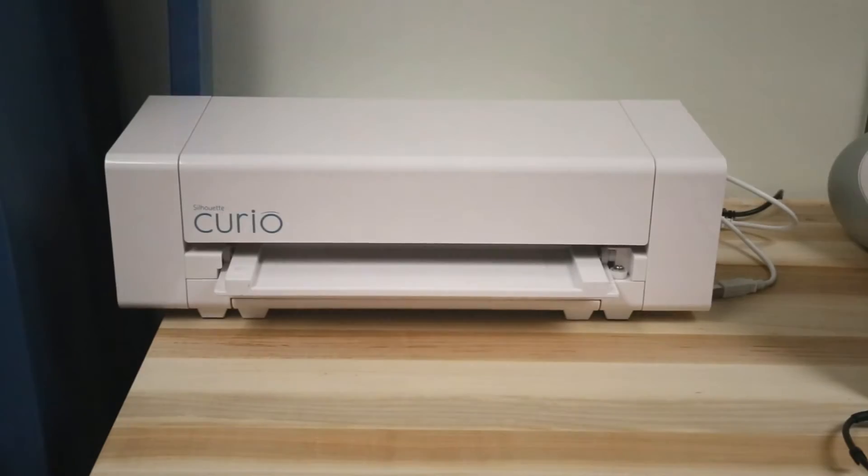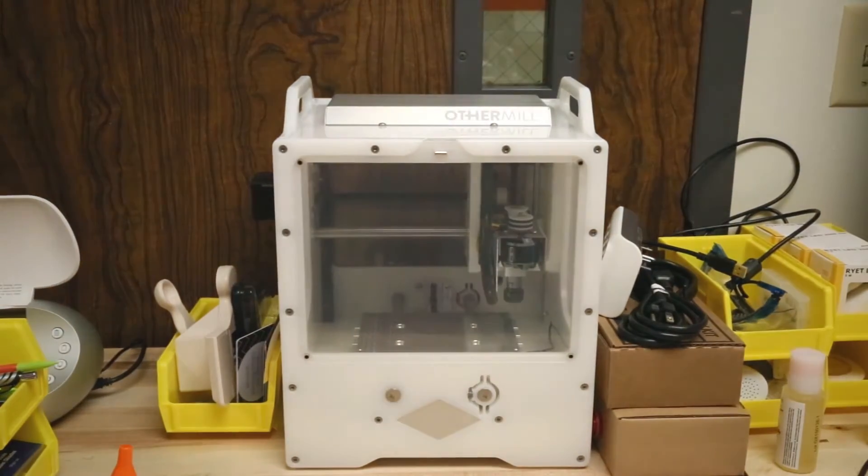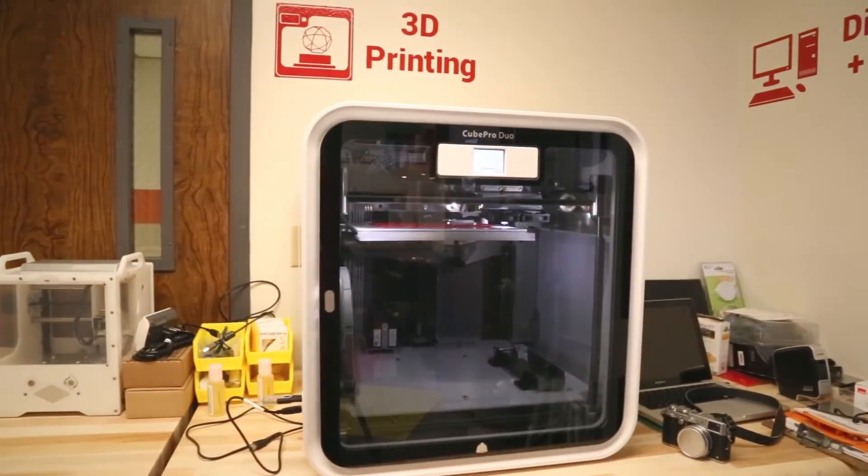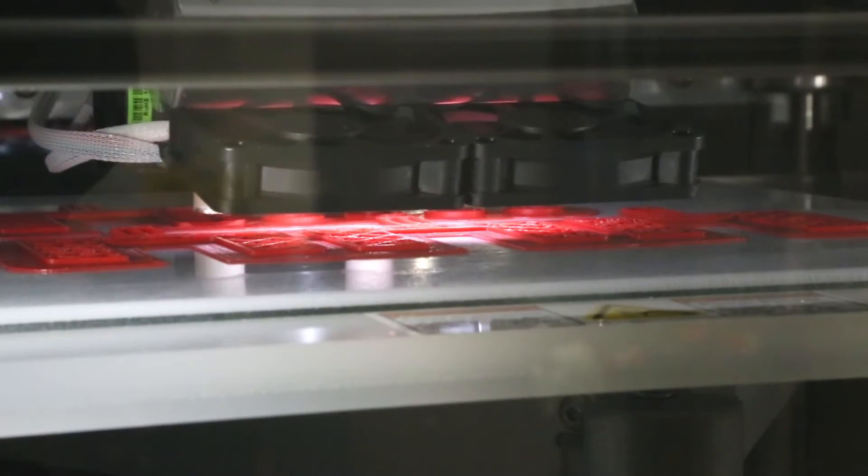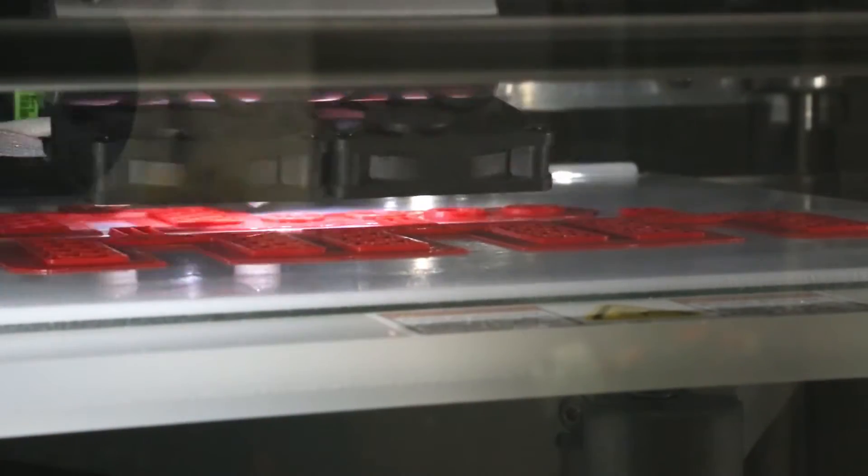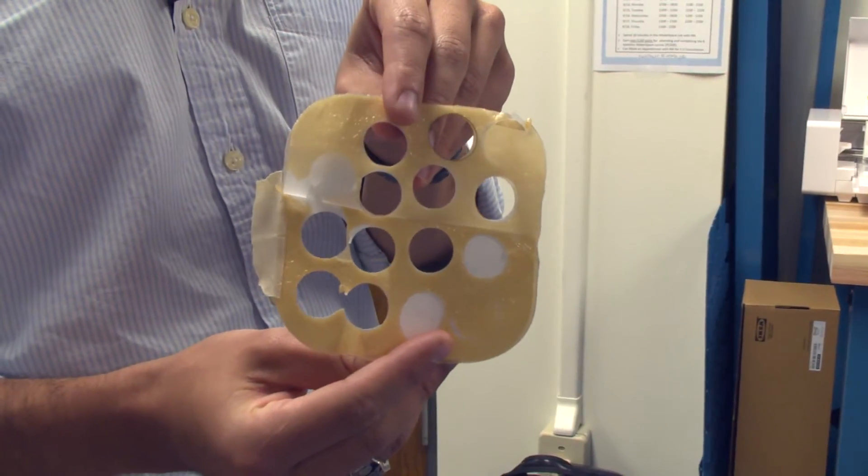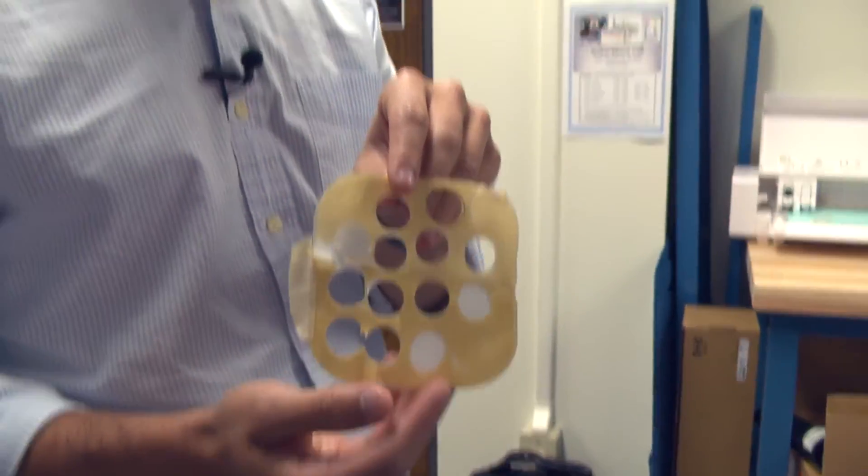So we've got different machines that can cut fabrics such as duoderm that nurses use every day on patients. We can cut very thin materials as well as start to cut thicker materials using a desktop CNC mill.